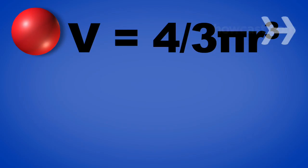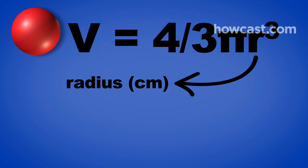If your candy is spherical, use the formula v equals 4 thirds pi r cubed, where r is the radius of one candy in centimeters.